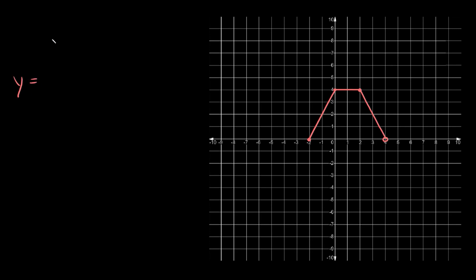So we're going to say y is equal to, and then we're going to put those three equations here. So let's start with this first one. We can find it using slope-intercept form. Remember, that's y equals mx plus b, where m is the slope and b is the y-intercept.